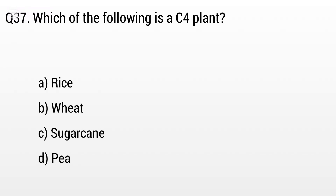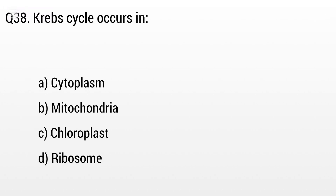Question 37. Which of the following is a C4 plant? Option A: Rice, B: Wheat, C: Sugarcane, D: Pea. The right answer is option C, Sugarcane.